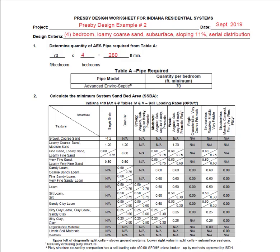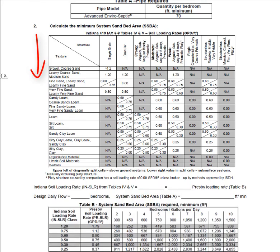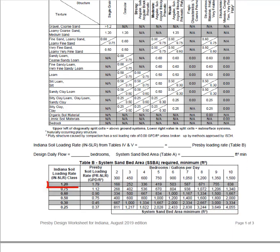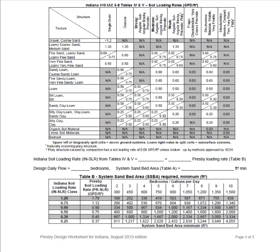In step number two we're going to calculate the minimum system sand bed area. You will see the table for Indiana soil loading rates below. We need to determine this loading rate based upon the on-site soils — in our case, loamy core sand. Look down the texture column of the table until you find loamy core sand. The Indiana soil loading rate is 1.2 gallons per day per square foot regardless of structure. Now that we have the Indiana loading rate, we can find the corresponding Presby loading rate in table B. Once we find 1.2 gallons per day per square foot, we move directly to the right and find the Presby loading rate, which in this case is 1.79 gallons per day per square foot. We will record these values on our sheet.